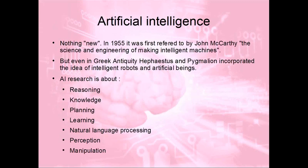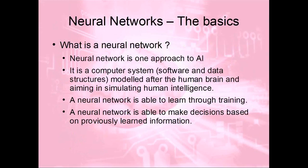Artificial intelligence is not really something new. It came up in the 1950s when John McCarthy spoke about making intelligent machines, but even long before that, mankind thought about intelligent robots and artificial beings. Today, under artificial intelligence we see a number of disciplines: reasoning, representing knowledge, planning, learning, natural language processing, natural speech, perception — like machines able to sort objects based on their form — and manipulation, like intelligent robots on assembly lines. Today we're only going to talk about the subset which is neural networks.